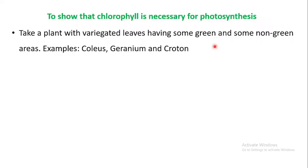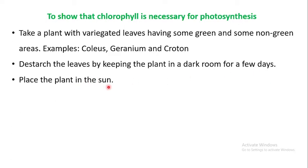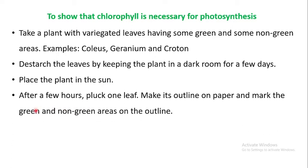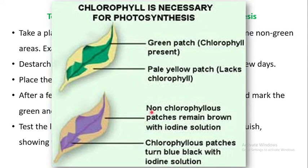First, we destarch the plant by keeping it in a dark room for a few days. Then we place the plant in the sun. After a few hours, we pluck one leaf, make its outline on paper, and mark the green and non-green areas. We then test the leaf for starch using the iodine test. Only the green parts of the leaf turn bluish-black, showing the presence of starch.